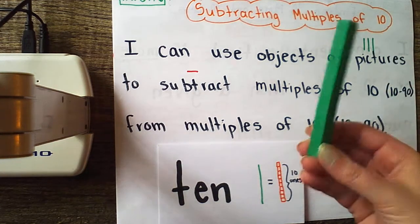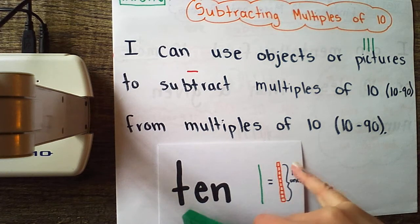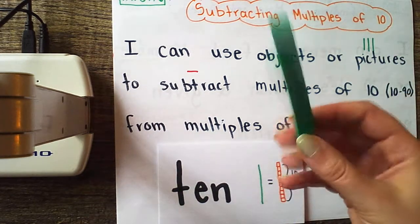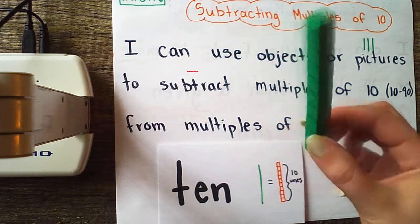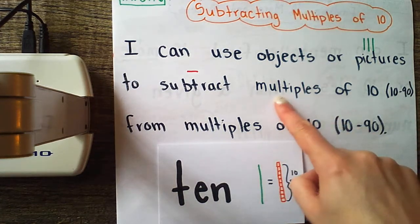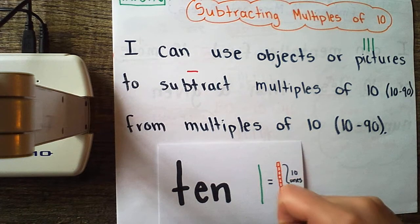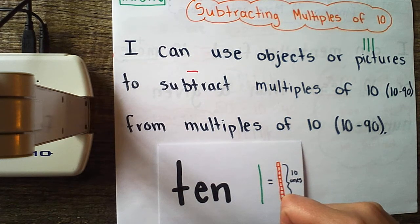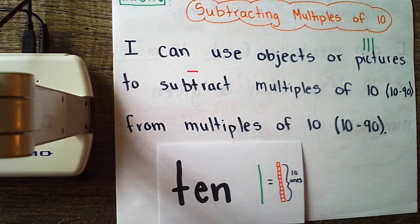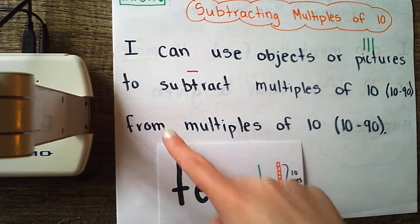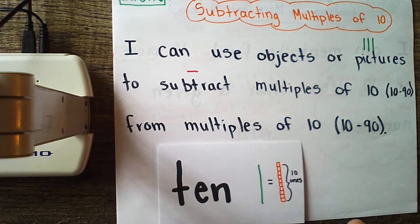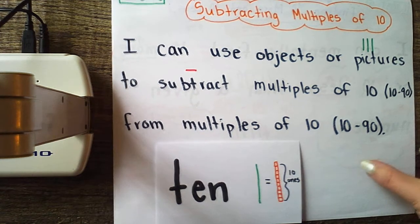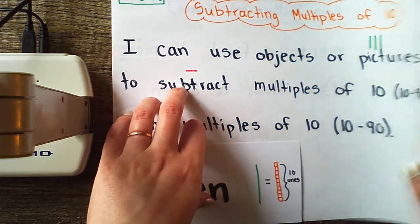A 10 is a group of 10 ones that we've put together to make one 10. But instead of just taking away one 10, I'm going to be taking away multiples of 10. Multiple just means more than one. So instead of taking away just one 10, I might be taking away two 10s, three 10s, four 10s, or five 10s, and I'm going to take that from multiples of 10. So I might start with three 10s and take two 10s away. Let's take a look at what this actually looks like.